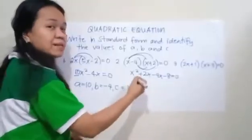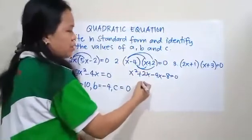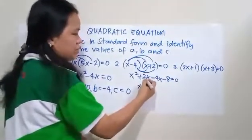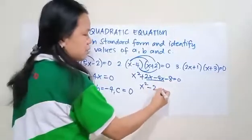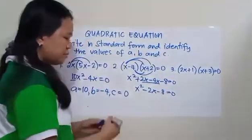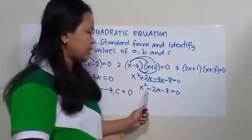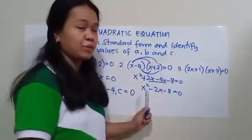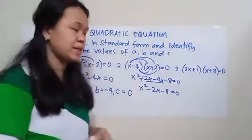And then combine similar terms. So it's x squared. 2x minus 4x is negative 2x minus 8 equals 0. Now observe that this one is already in standard form. Now we can find the values of A, B, and C.